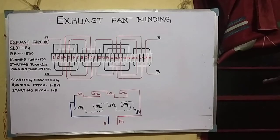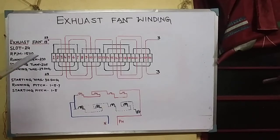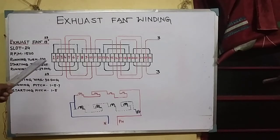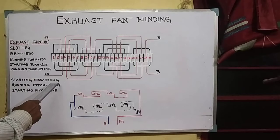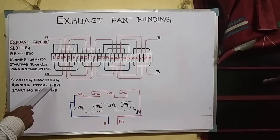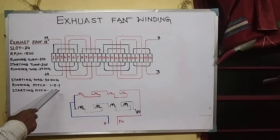This is an exhaust fan winding. The exhaust fan is 15 inch. Slot is 24, RPM is 15. Running turns are 23, starting turns are 25. Starting coil oil is 35, running oil is 25, starting oil is 25.